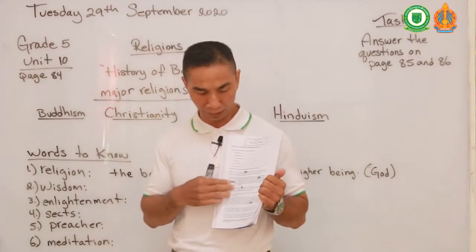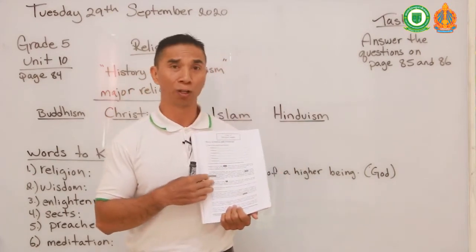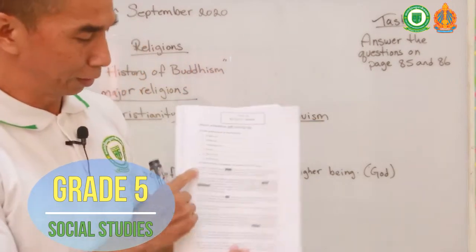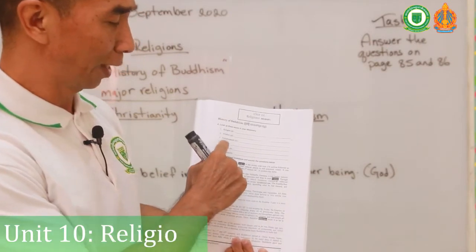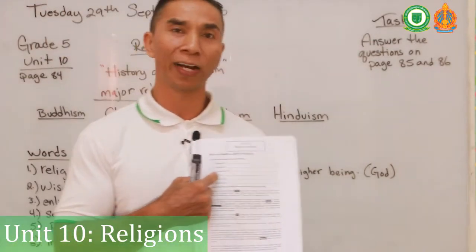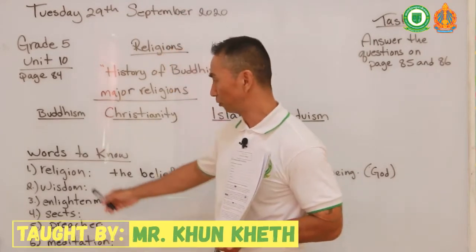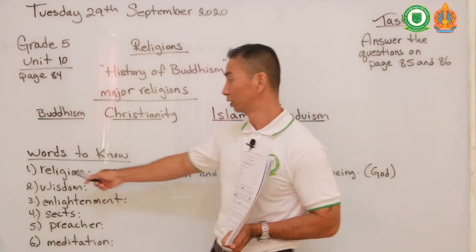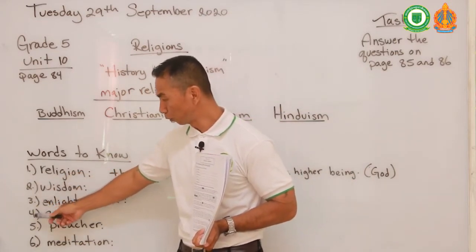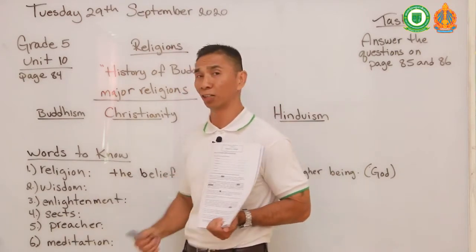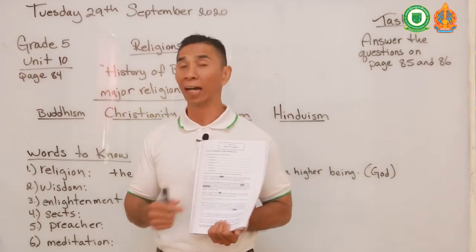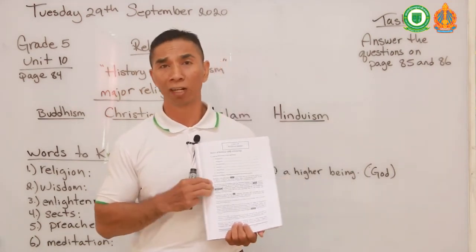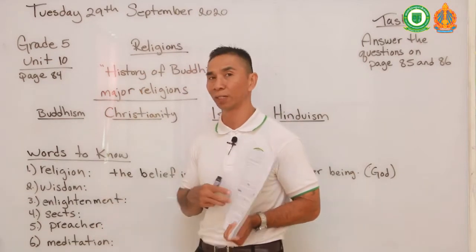Once you read this text you will come across some words that might be hard to understand. These words are listed on the board and also at the top of your book. There are six words at the top of your book where they want you to define them — find the meanings before you start your reading. I have written the meaning of only one of these words on the board. For the rest, I want you to read the text, find the meanings, and write them down in your book, then send it to me on our Telegram post.